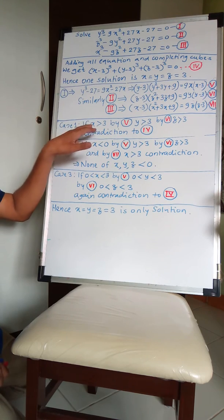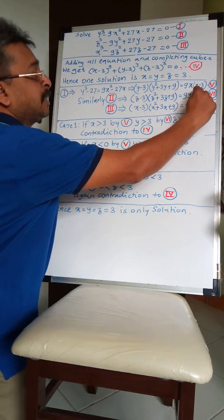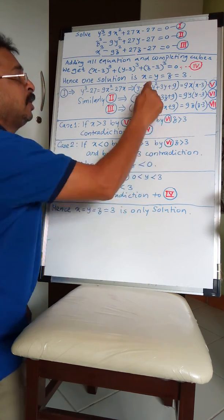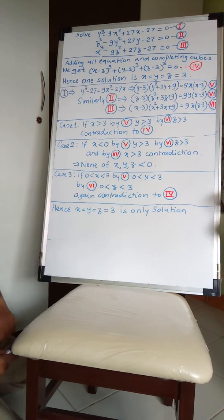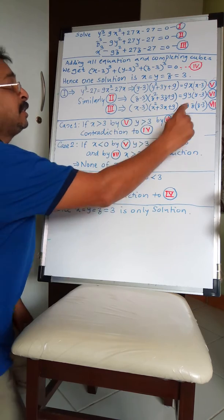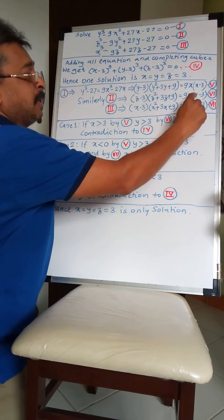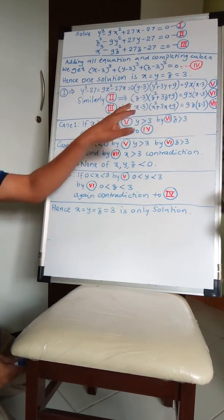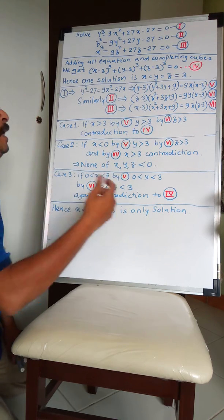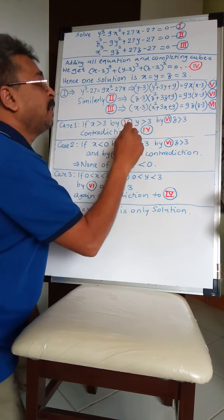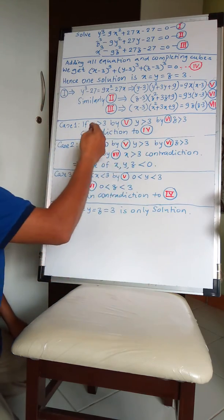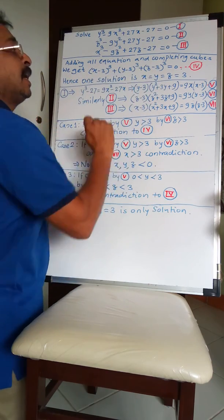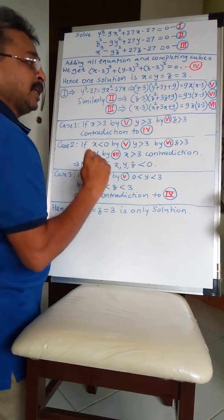Case 1: if x > 3, then the bracket (x - 3) is positive and x is also positive, so RHS is positive, and hence LHS must be positive, meaning y > 3. Using y > 3 in equation 6 by the same logic gives z > 3. So if x > 3, then y > 3 and z > 3, which means their sum of cubes cannot equal 0 — contradiction with equation 4.